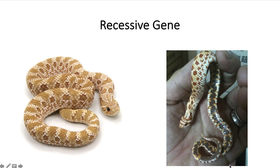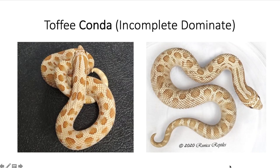The first one we're going to get into is the incomplete dominant gene — the anaconda. Basically it causes pattern reduction, and you can see the toffee conda: basically the toffee animal but with a reduced pattern. I really like the picture of the animal on the right-hand side — it has a pattern similar to a new snake I got, kind of faded out with that clean white background.